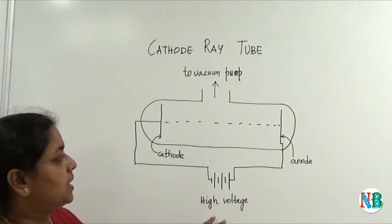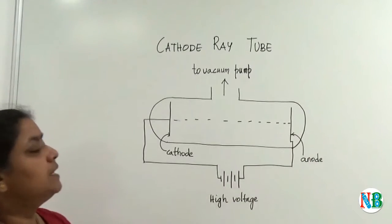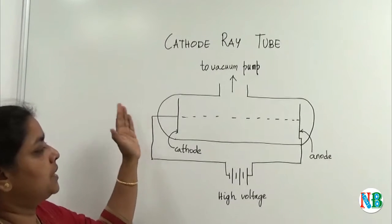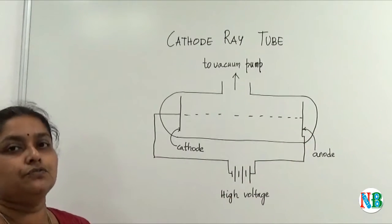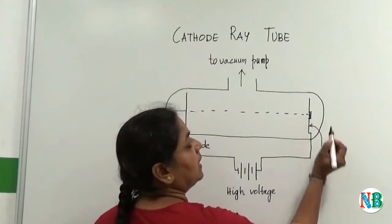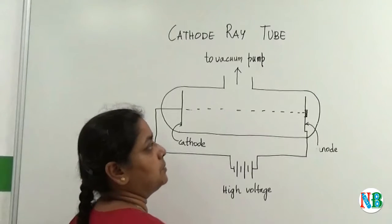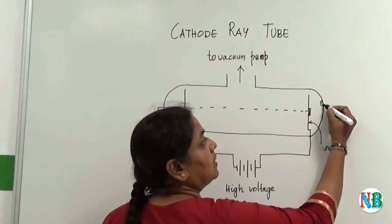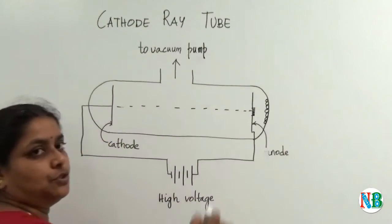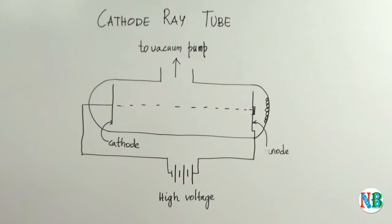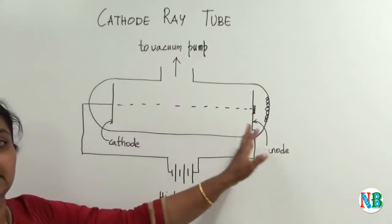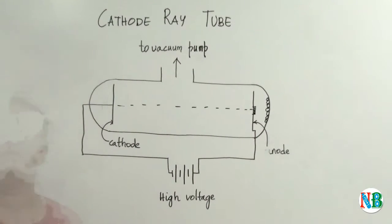When the current is passed to the cathode and the anode, it was seen that a stream of particles moved from the cathode towards the anode. To further see this, a hole was created in the anode and on repeating this experiment, it was seen that a thin film was coated on the inside of the glass tube. This led to the assumption that there are negatively charged particles being released when a current is passed to a cathode.